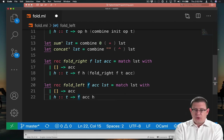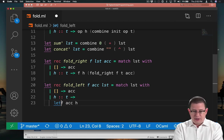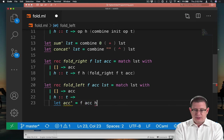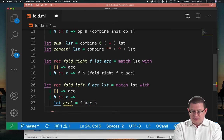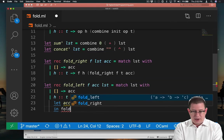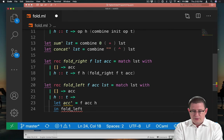That gets us a new value for the accumulator. In fact, I could even make that clear by saying this is the new accumulator, acc prime here. And then what do we need to do with that? We need to continue folding. So we need to make a recursive call, fold left of the function with that accumulator and the tail.